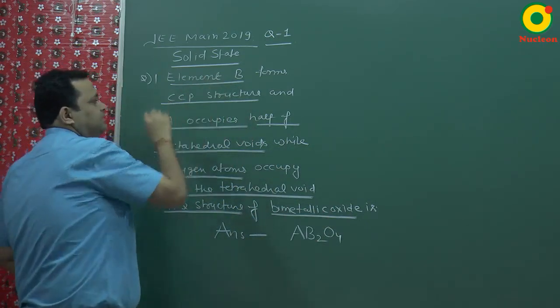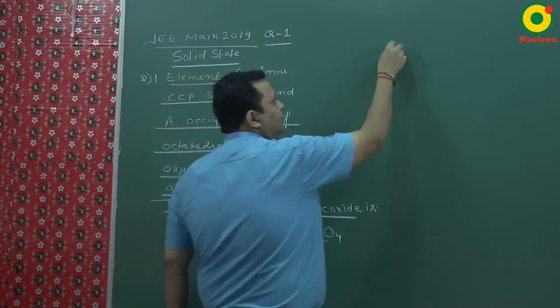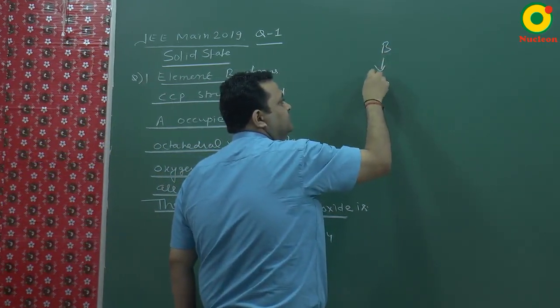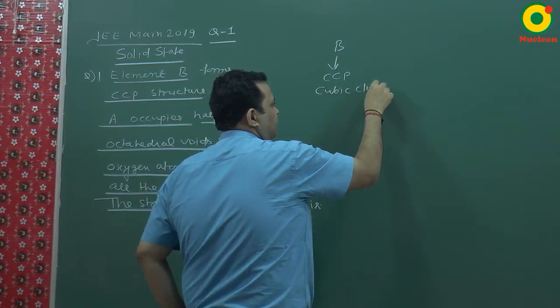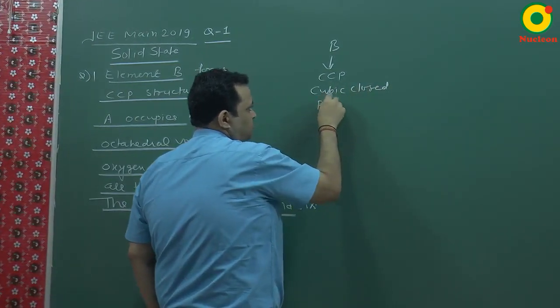First starting to do element B. He says that B occupies CCP structure. CCP means cubic close packing. Full form, what is it? Cubic close packing.